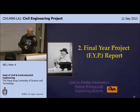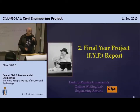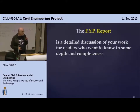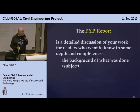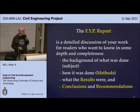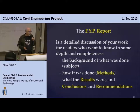I'm using a lot of things from Purdue University's online writing labs — I think the Language Center uses a lot of that material too. There's a link here you can click to go directly to Purdue University's material. The FYP report is a detailed discussion of your work for readers who want to know in depth the background of what was done, the subject, how it was done — that's your method section — what the results were — the results section — conclusions, and recommendations. These are four sections required in the template the Civil Engineering Department gives you.